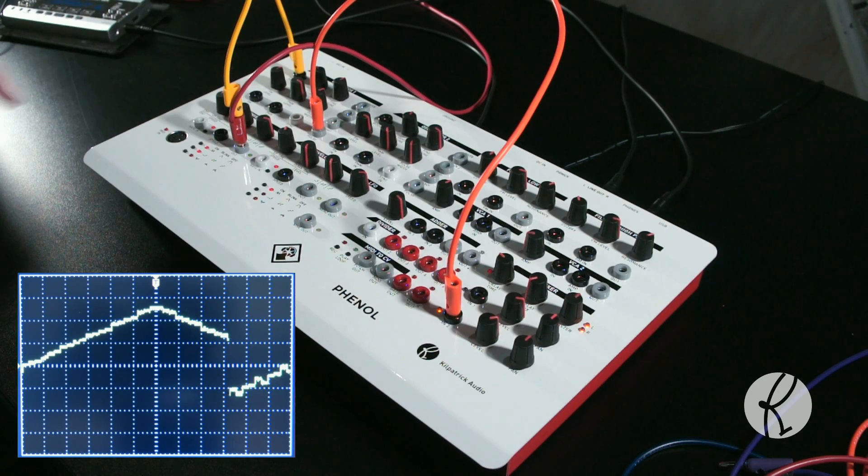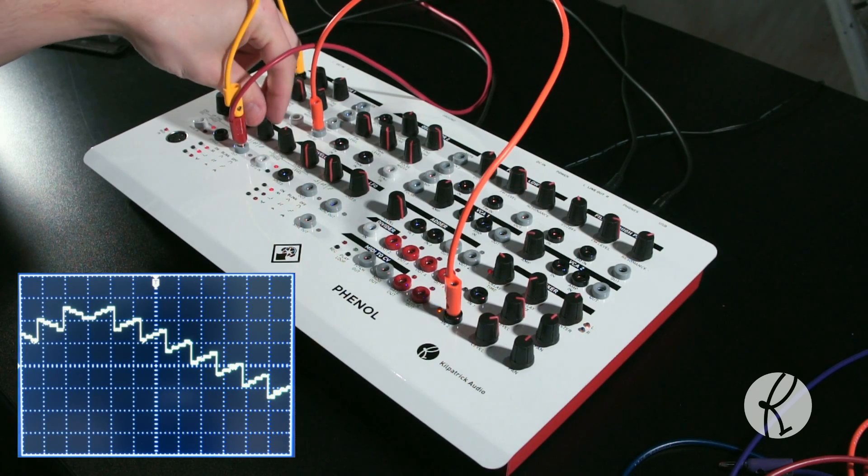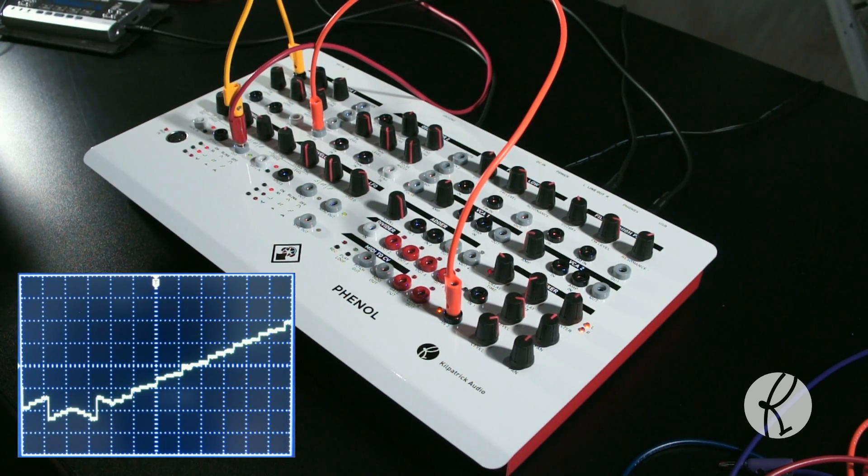The third mode for the third control is called scale quantize mode. In this mode, instead of quantizing to evenly spaced steps as in steps mode, the output will be quantized to musical scales or arpeggios.